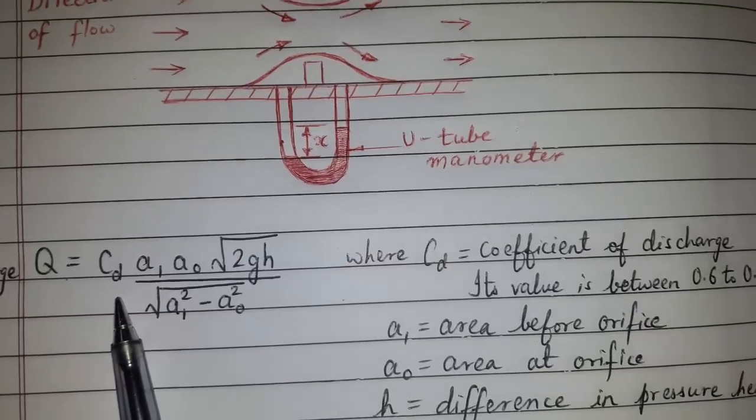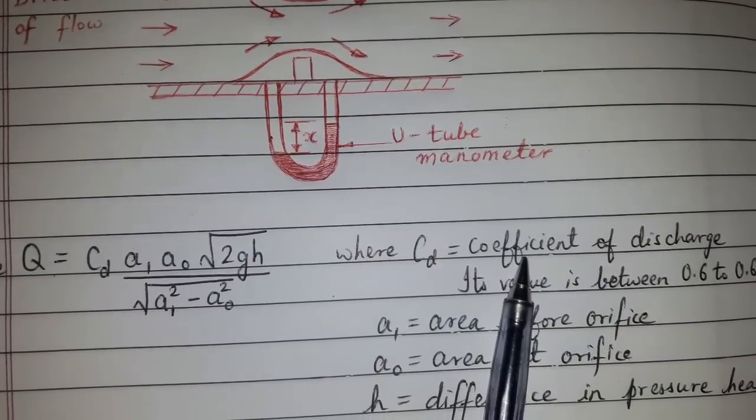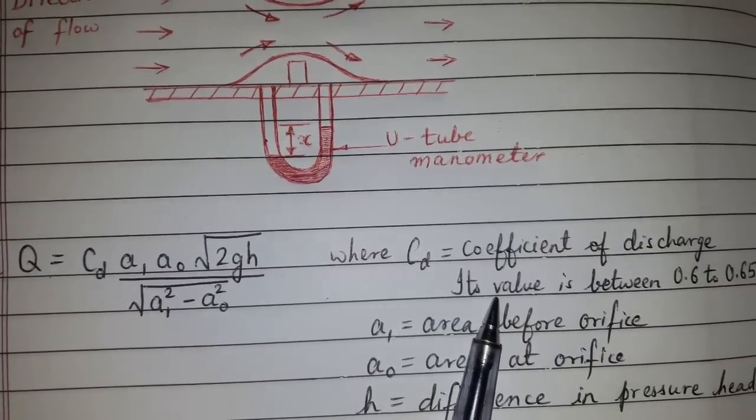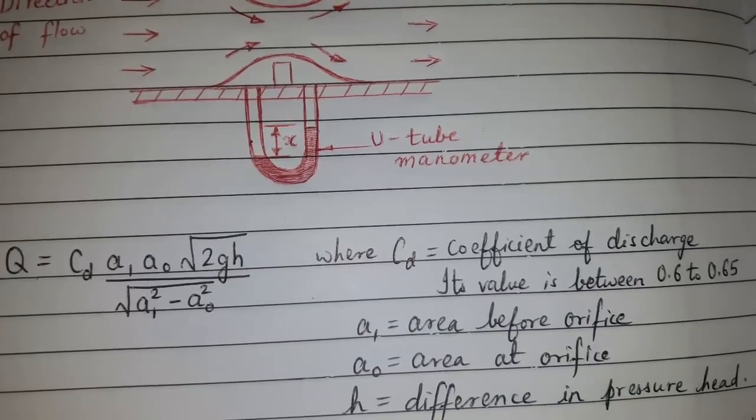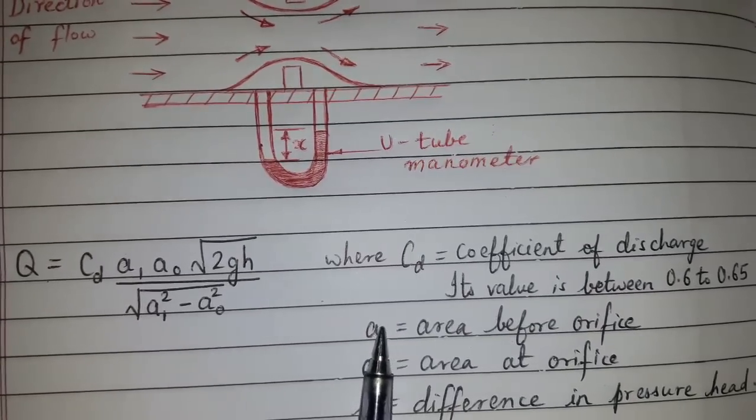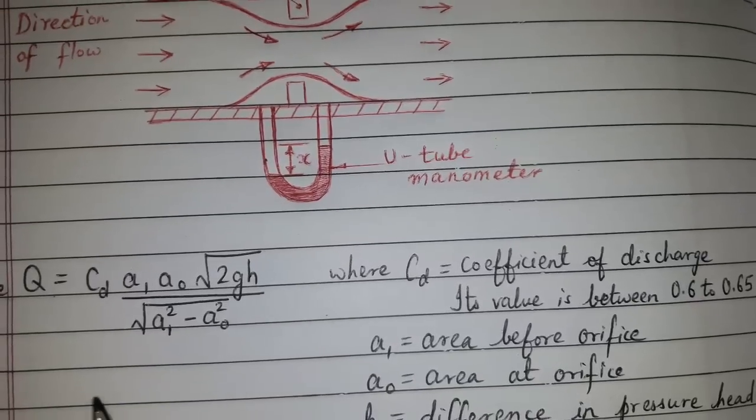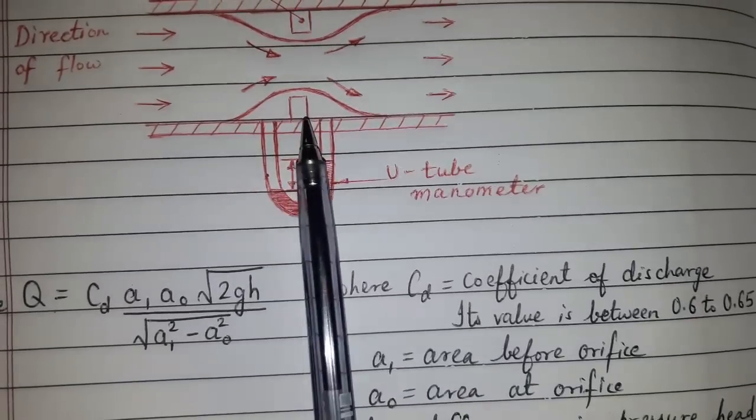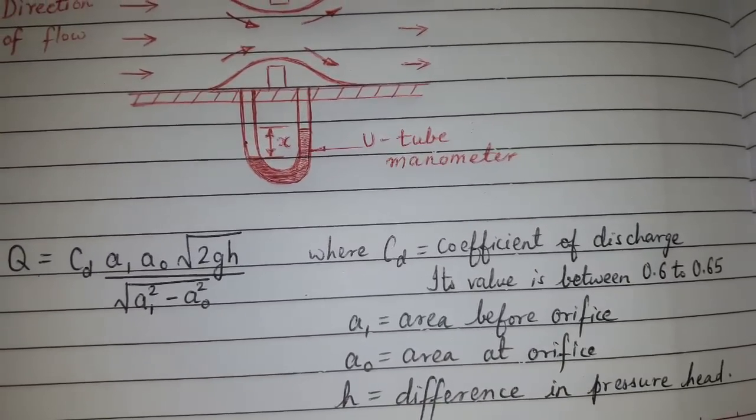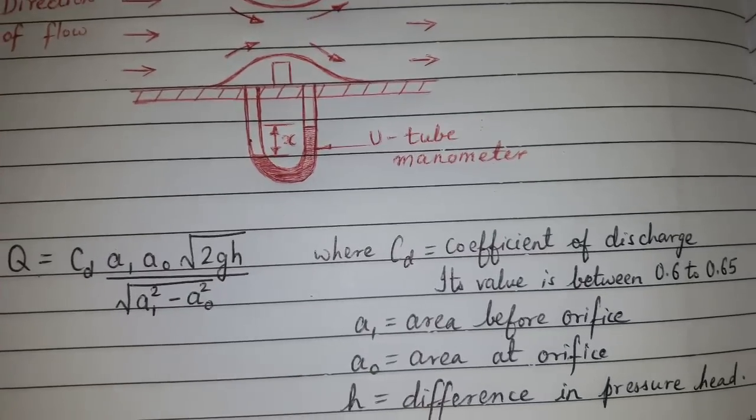Where CD is the coefficient of discharge, its value is between 0.6 to 0.65. A1 is the area before the orifice. A0 is the area at the orifice. H is the difference in pressure head.